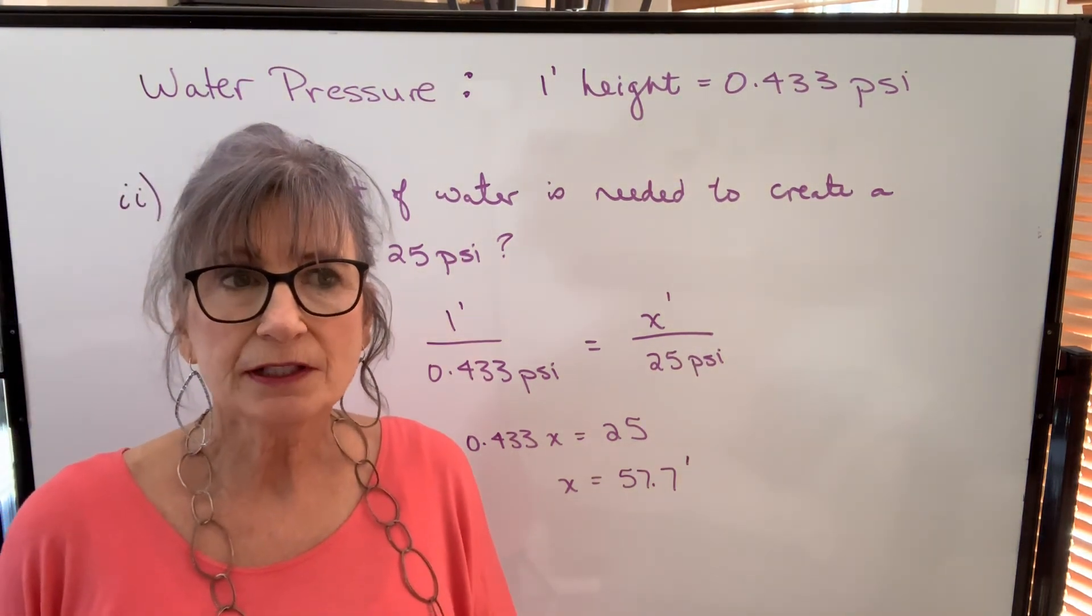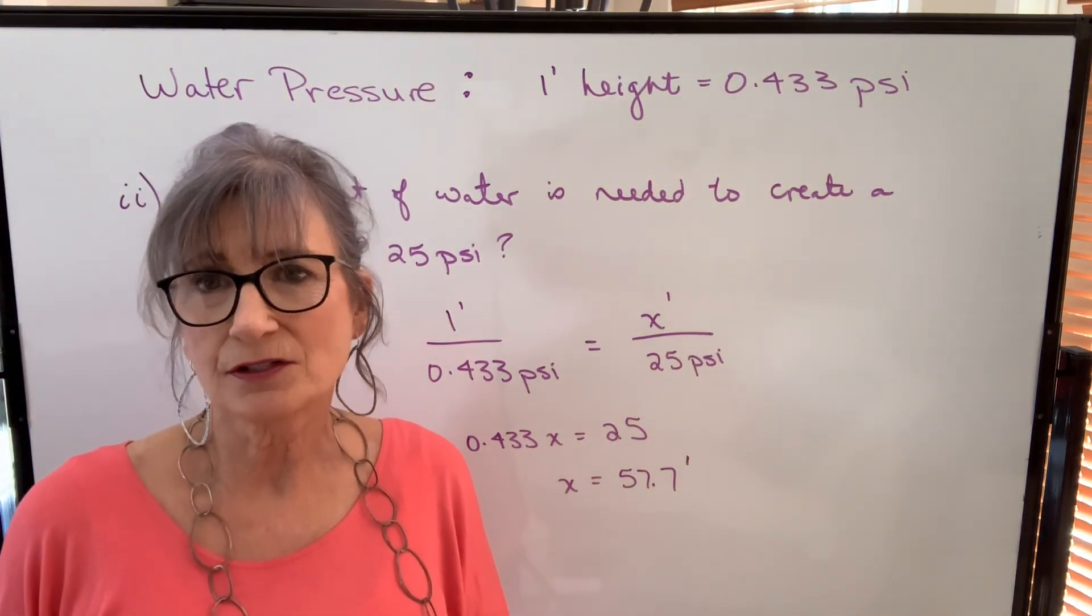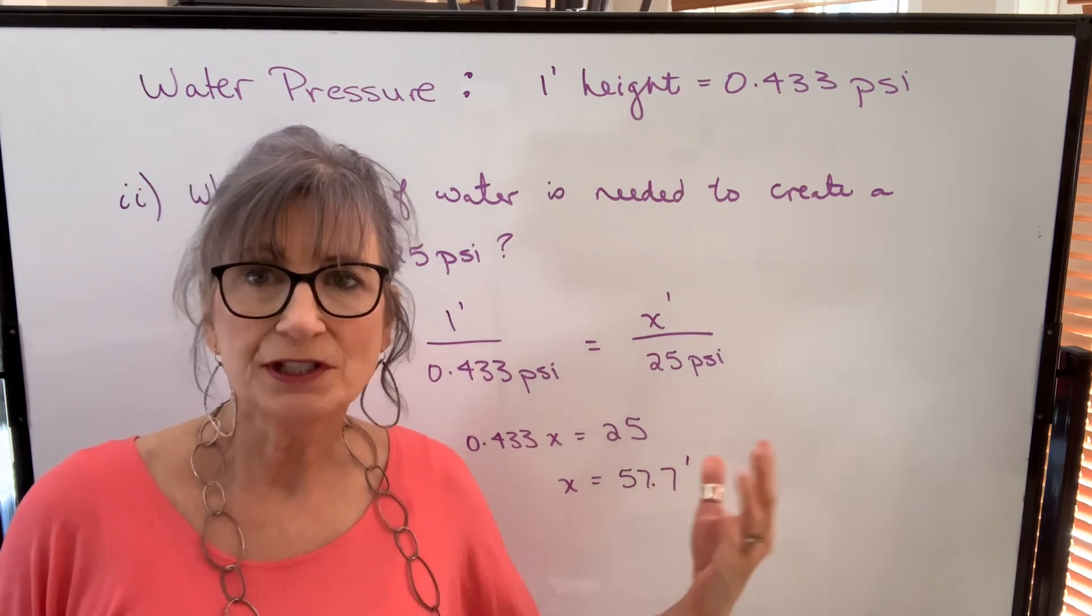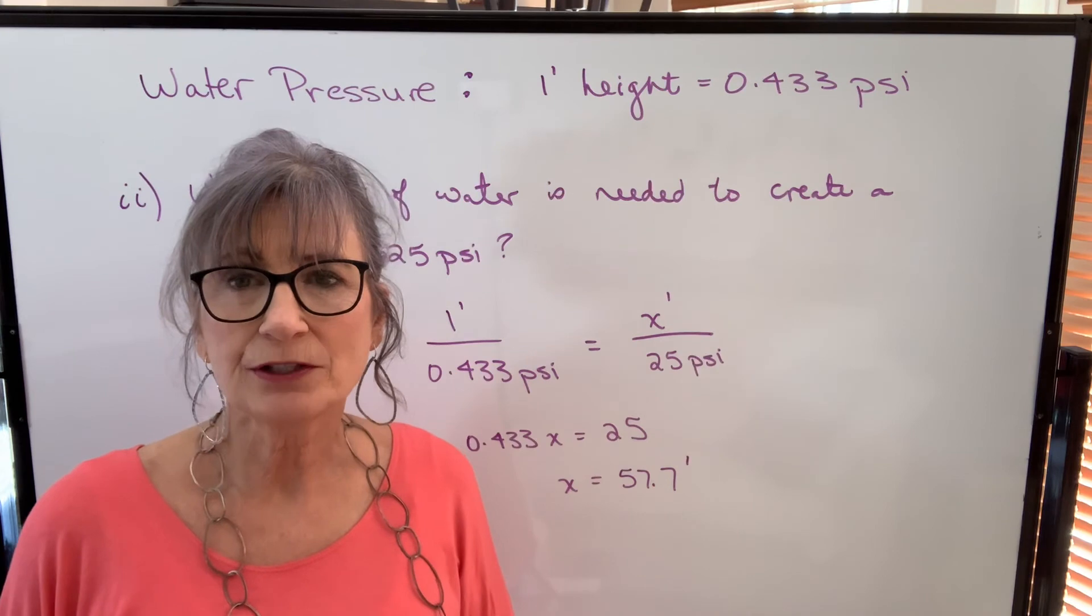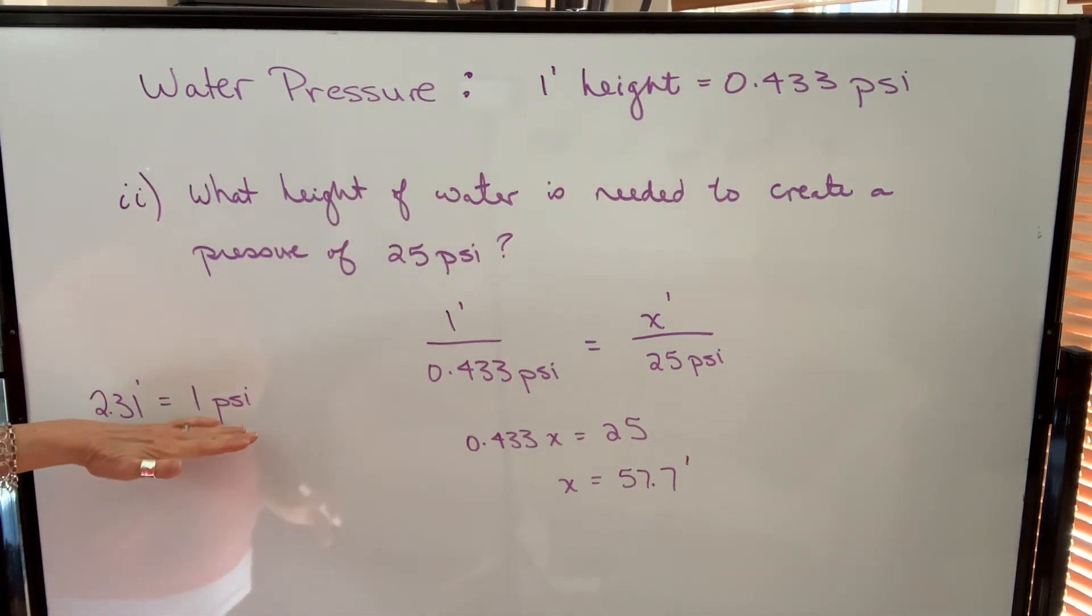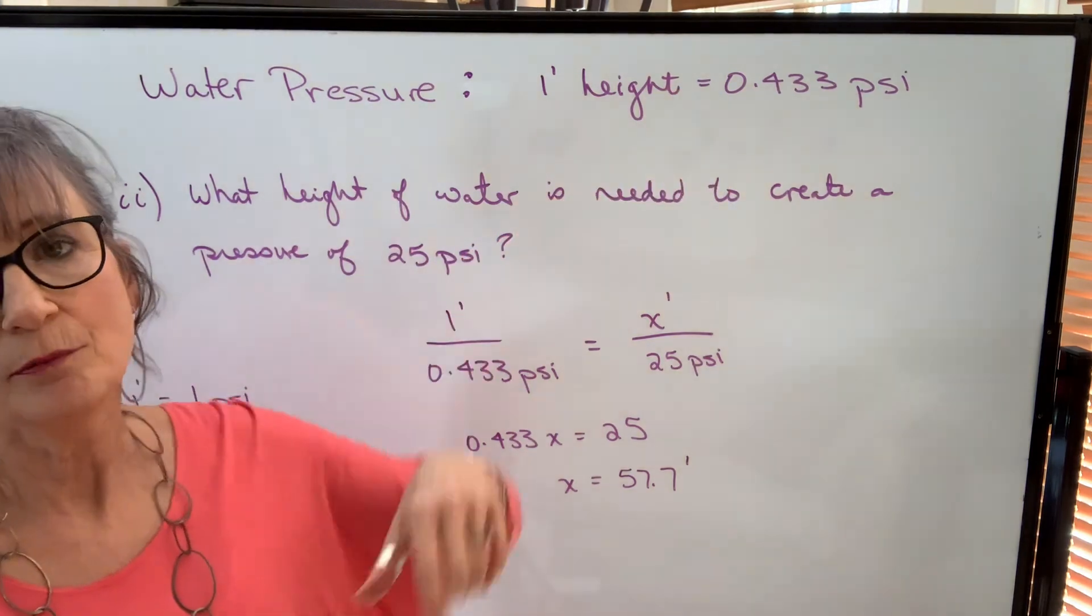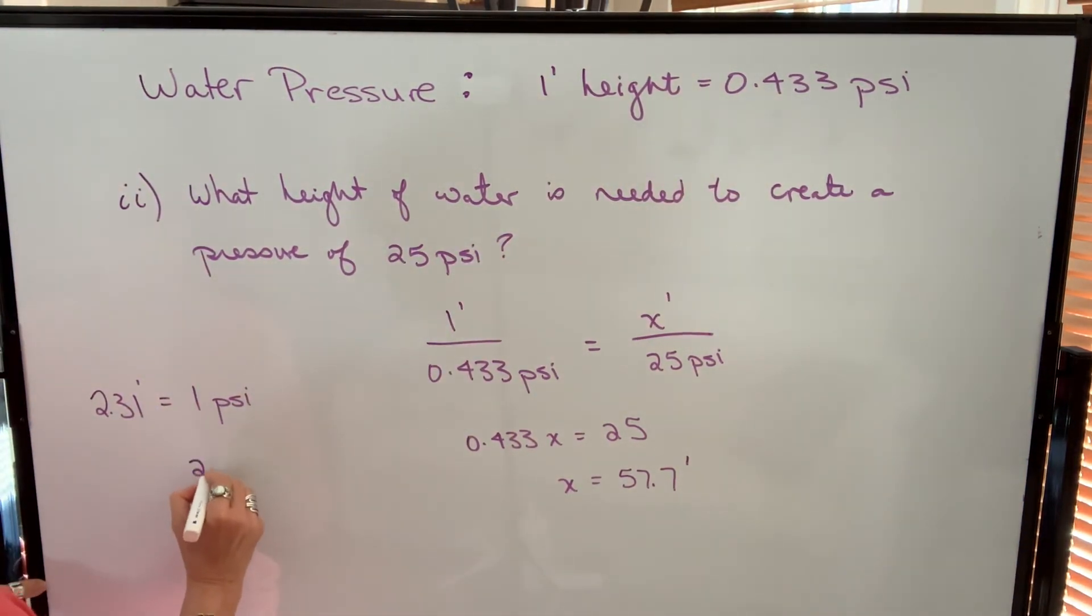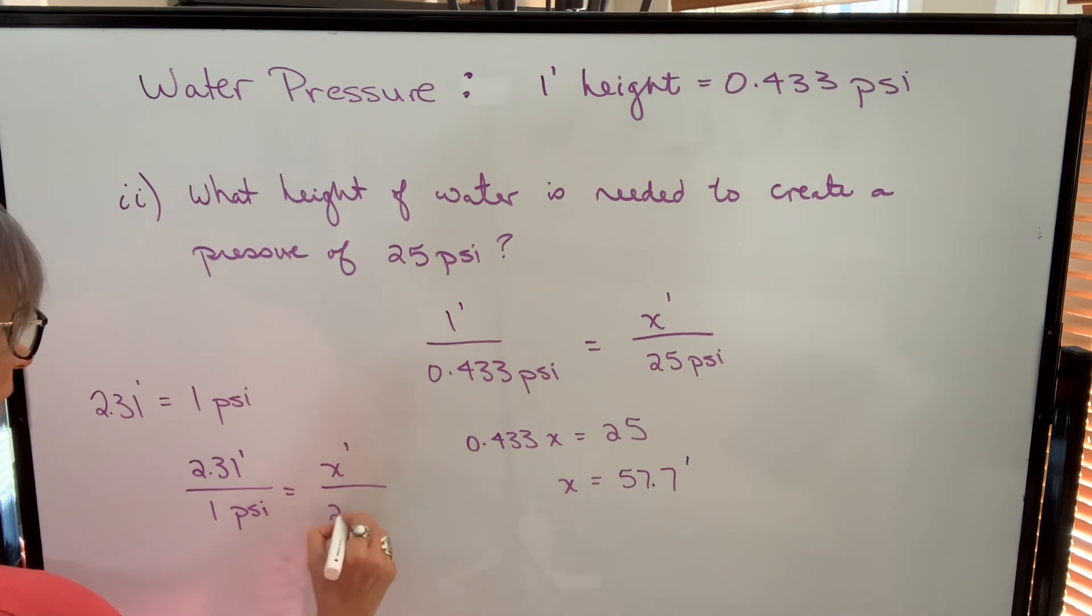Now there is another shortcut that I've seen students and instructors use for water pressure. Instead of 1 foot is 0.433 pounds per square inch, that is 2.31 feet is 1 psi. So you can use this one or this one, but still use direct proportion. If I were to use this, I would have 2.31 feet gives 1 psi, so in this example I want to know how many feet to get 25 psi.